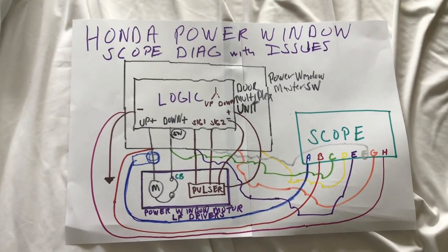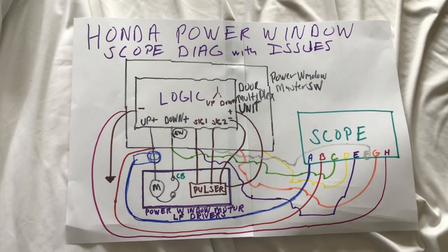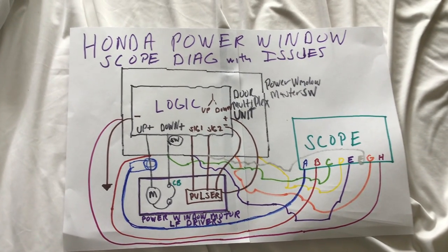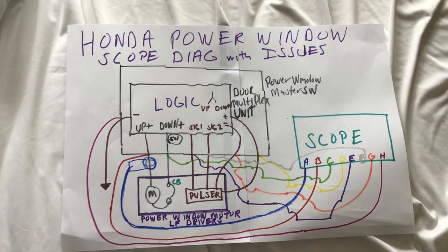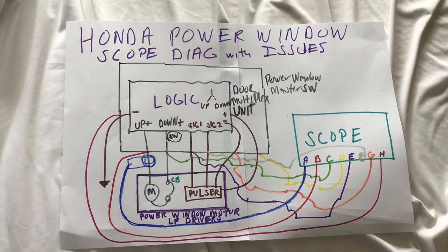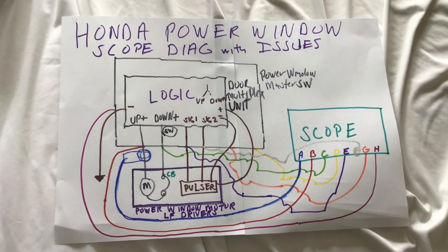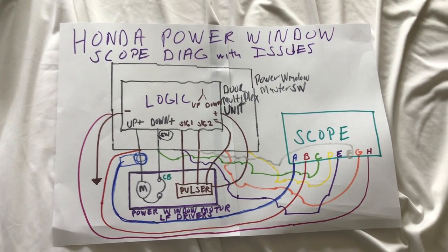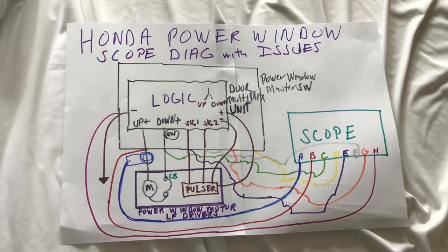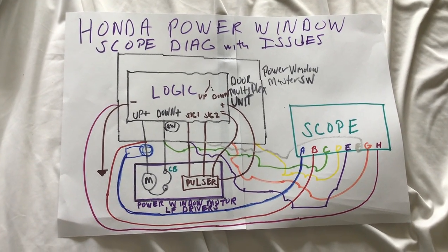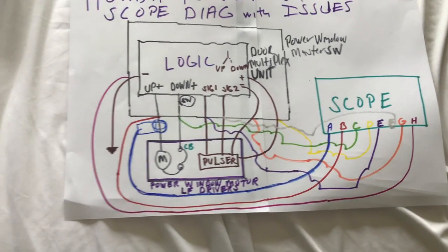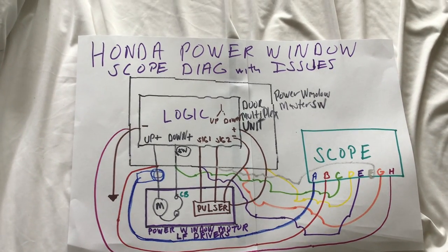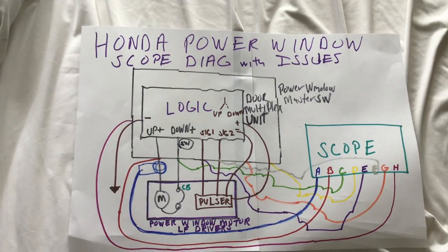We're going to scope out this situation. It still has an issue — every now and then it sticks. The door multiplex unit appears to be sticking and powering the window motor when it shouldn't. It doesn't know when to stop; it keeps powering the motor when the motor's at the end of its travel and binding. Sometimes the circuit breaker gets hot and opens, and sometimes the power window matches which acts normal.